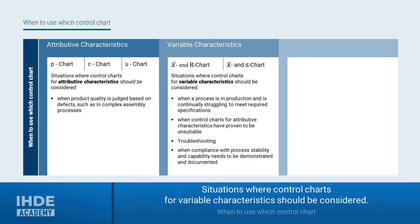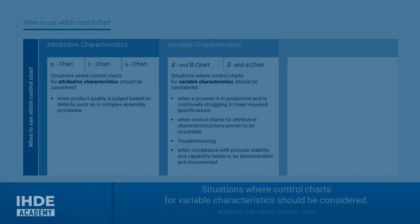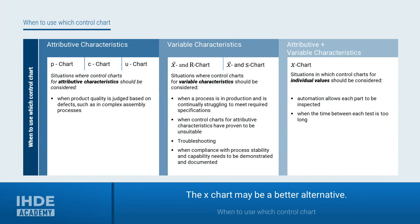Because of their higher information content, variable control charts are used for troubleshooting or problem solving. They are also used when compliance with process stability and capability needs to be demonstrated and documented. X charts — control charts for individual values, for both attributive and variable characteristics — are also used when automation allows measurement of each part, or when the periods between individual tests are too long.